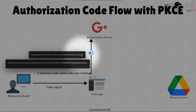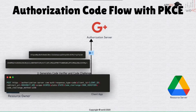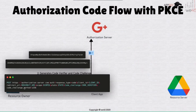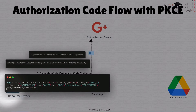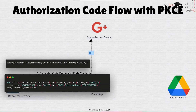With the authorization code flow, the client application sends the code challenge in the initial request — not the code verifier, but the Base64-hashed version. When requesting the authorization code, it says: here is my code challenge and the method I've used is SHA-256. So it declares the client ID, redirect URI, scopes, state, and also a code challenge parameter containing the SHA-256 hashed Base64 value, declaring that this particular value has been hashed as SHA-256.